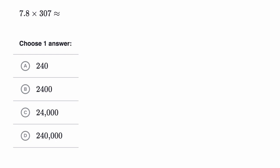Let's now get some practice estimating multiplying with decimals. So first here we have 7.8 times 307 is approximately equal to what? When you see the squiggly equal sign, that means approximately equal to what? So pause this video and see if you can figure it out on your own.